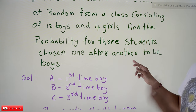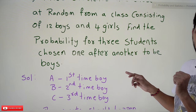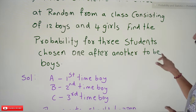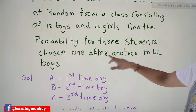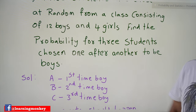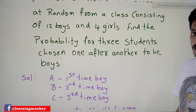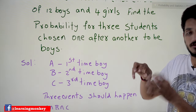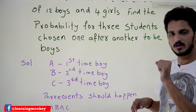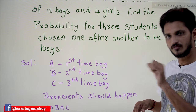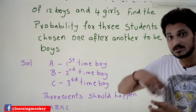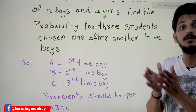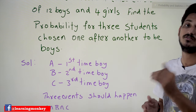What they are asking is: find the probability that all of them should be boys, one after another. Here you have to understand — we are not going to replace. The first time we select one student, if it is a boy, we are not going to put the boy back in the class. So these are dependent events.